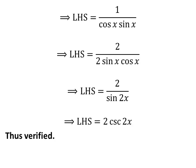We know 1 upon sin of 2x is equal to cosecant of 2 times x. So the left hand side of the identity is equal to 2 times cosecant of 2 times x. Thus the left hand side of the identity is equal to the right hand side of the identity. Hence the identity is verified.